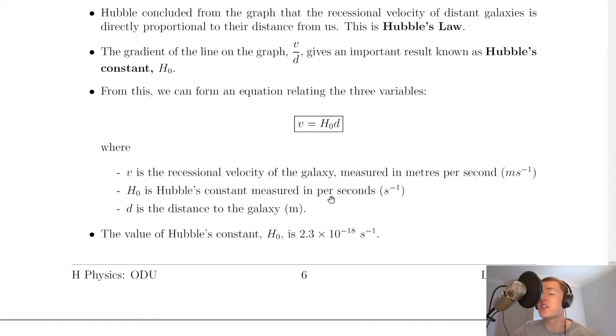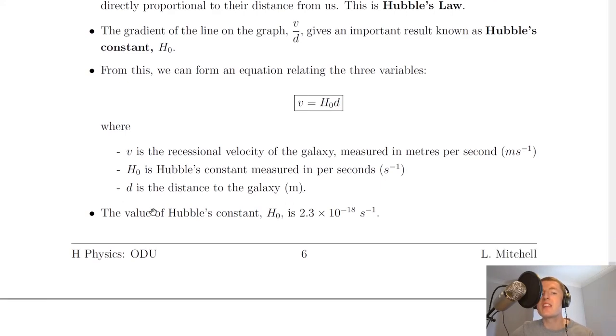H0 is Hubble's constant measured in per seconds or one over seconds. So notice that Hubble's constant is a rate one over seconds with respect to time and D is the distance to the galaxy measured in meters. It then says that the value of Hubble's constant H0 is 2.3 times 10 to the minus 18 per second and you get that value on the data sheet in the exam so you don't have to remember it.